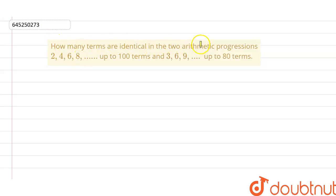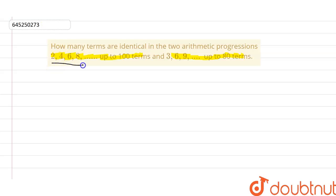Hello guys. We have to find how many terms are identical in two arithmetic progressions. The first one is 2, 4, 6, 8, up to 100 terms, and the second one is 3, 6, 9, up to 80 terms. First of all, we will find the 100th term in the first AP.